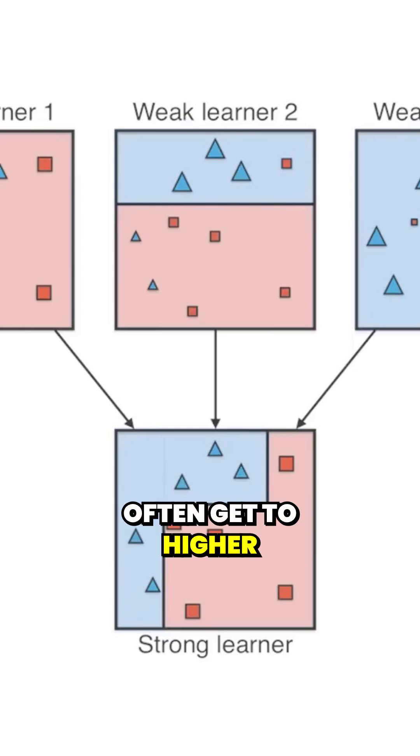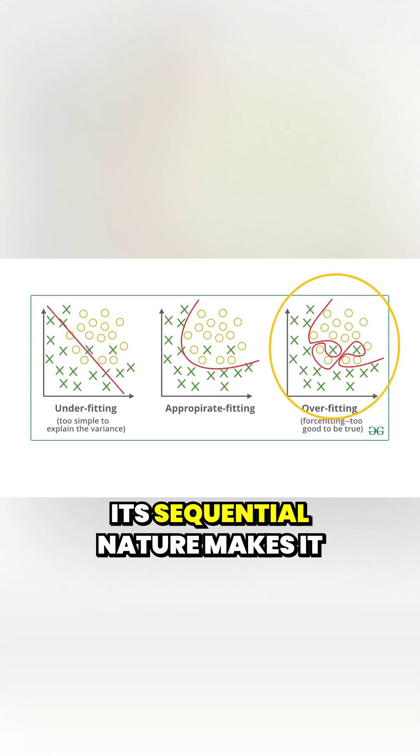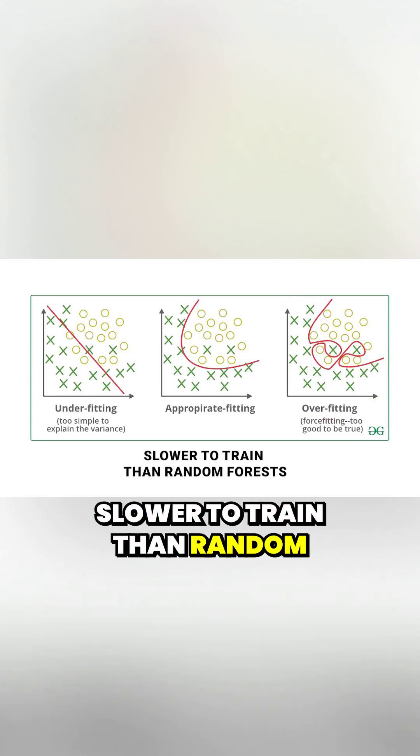Boosted trees often get to higher accuracies than random forests, but are also more prone to overfitting. Its sequential nature makes it slower to train than random forests.